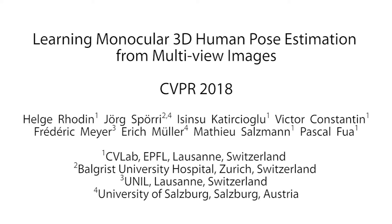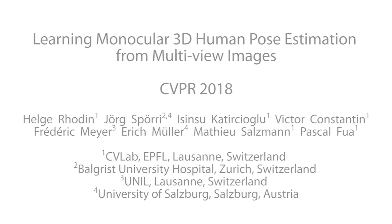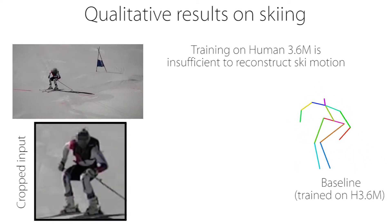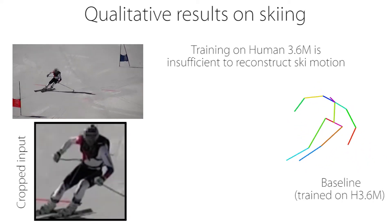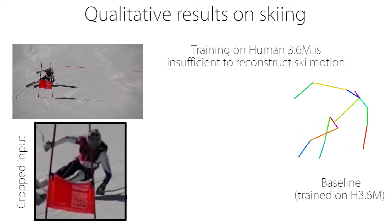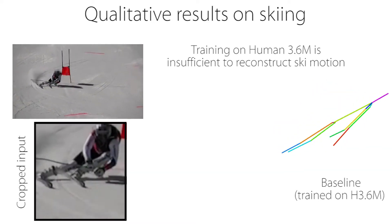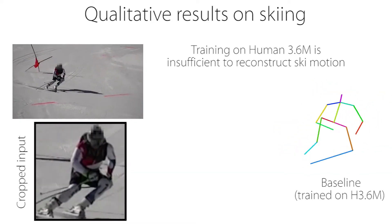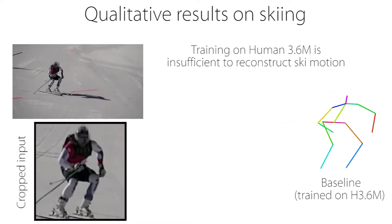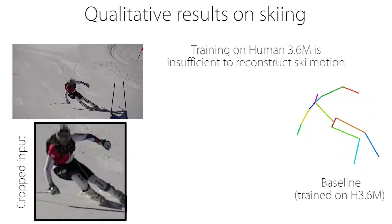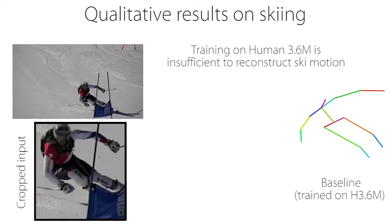Learning monocular 3D human pose estimation from multi-view images. Accurate 3D human pose estimation from single images is possible with sophisticated deep net architectures trained on very large datasets. However, this still leaves open the problem of capturing motions for which no such database exists.